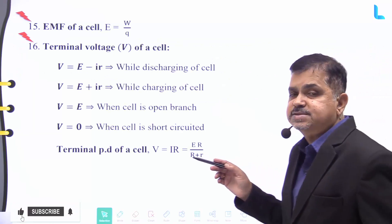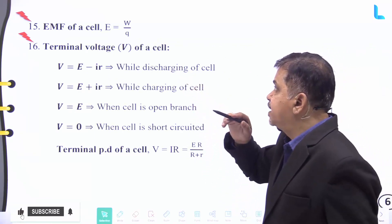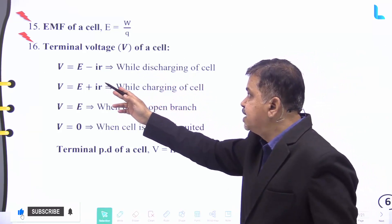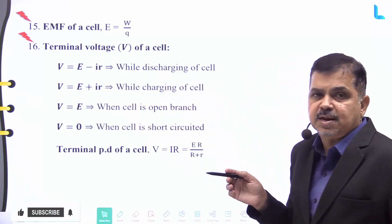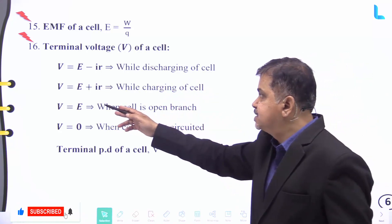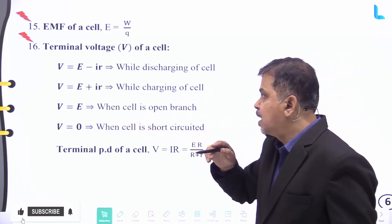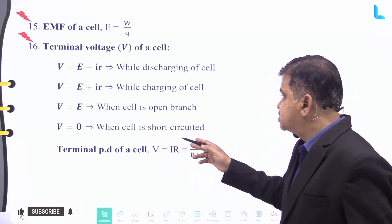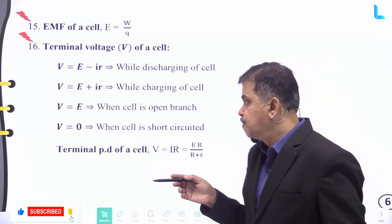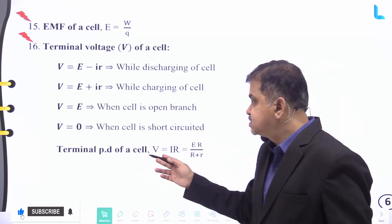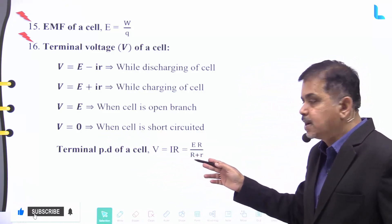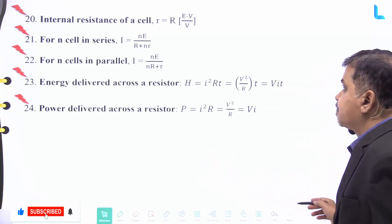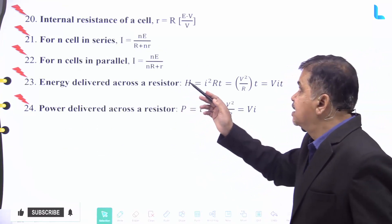The EMF of a cell E is given by W by q. The terminal voltage V of a cell is given by V equal to E − Ir while discharging, and V equal to E + Ir while charging. When the cell is open, V equal to E, and when the cell is short-circuited, V equal to 0. The terminal potential difference V is given by I × R, equal to ER divided by (R + r).